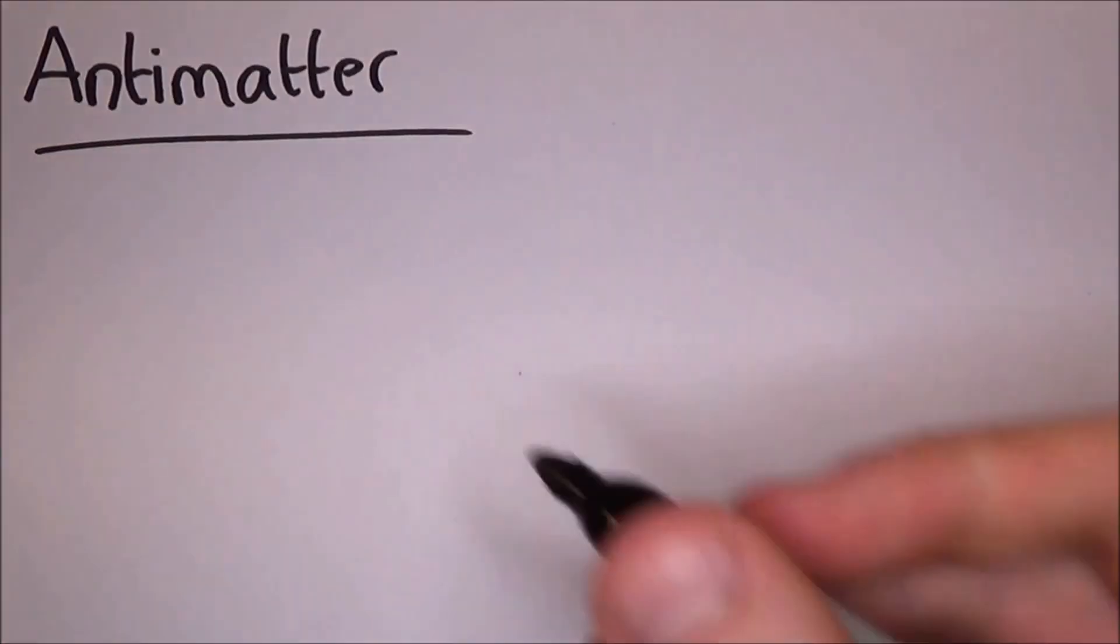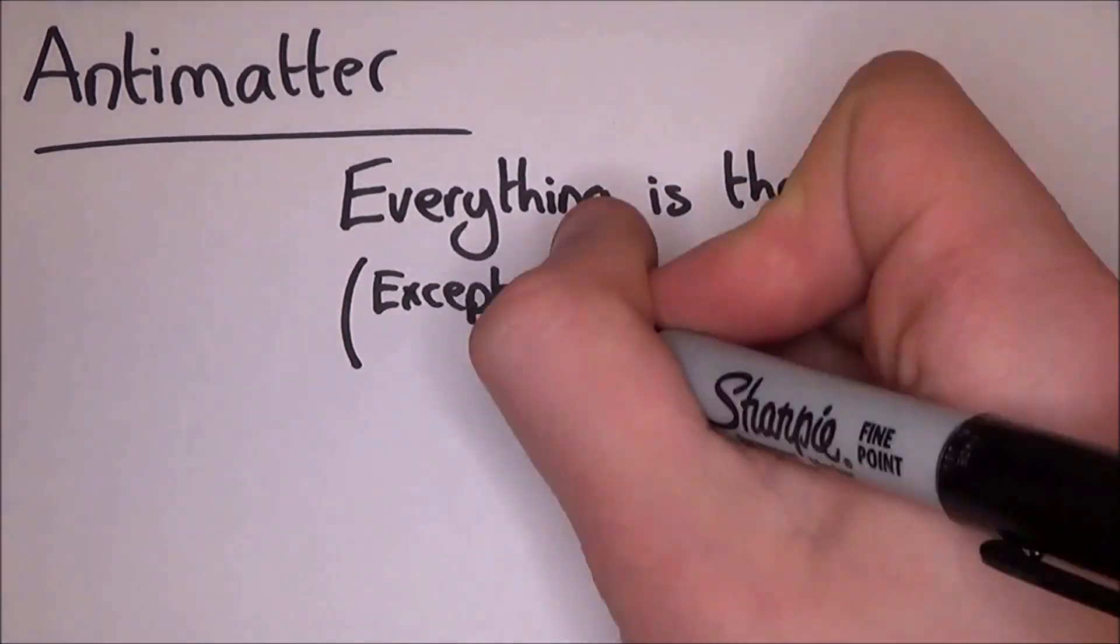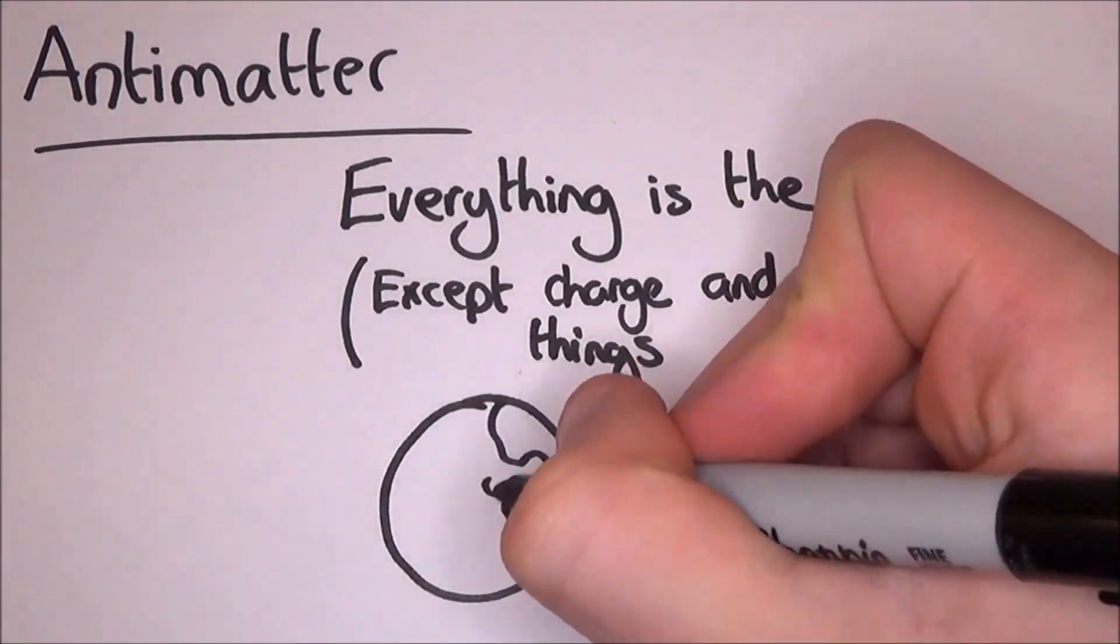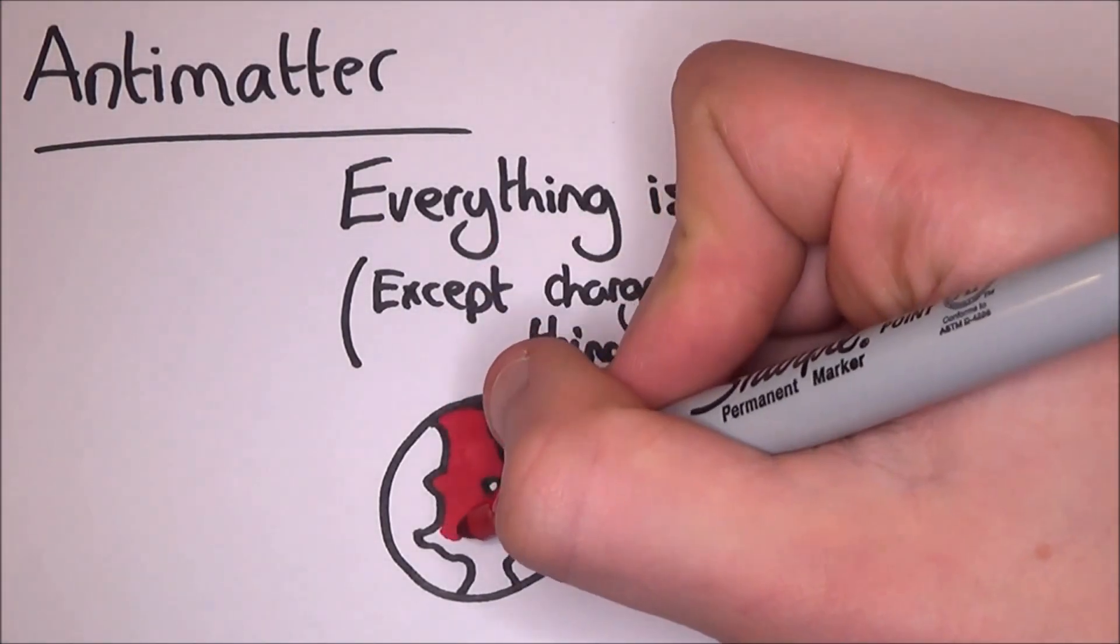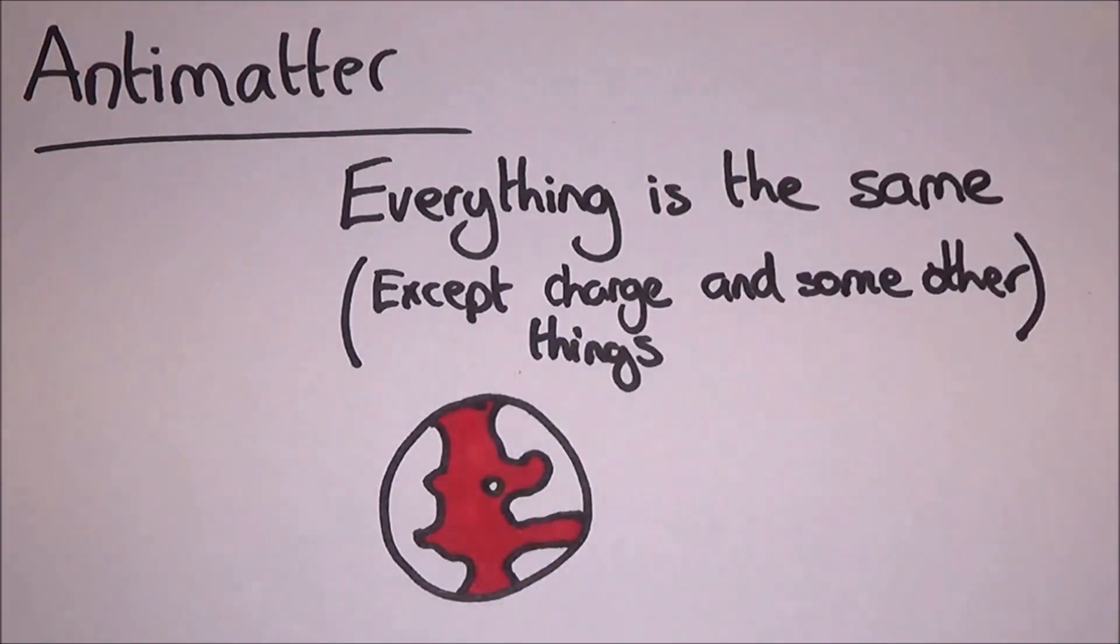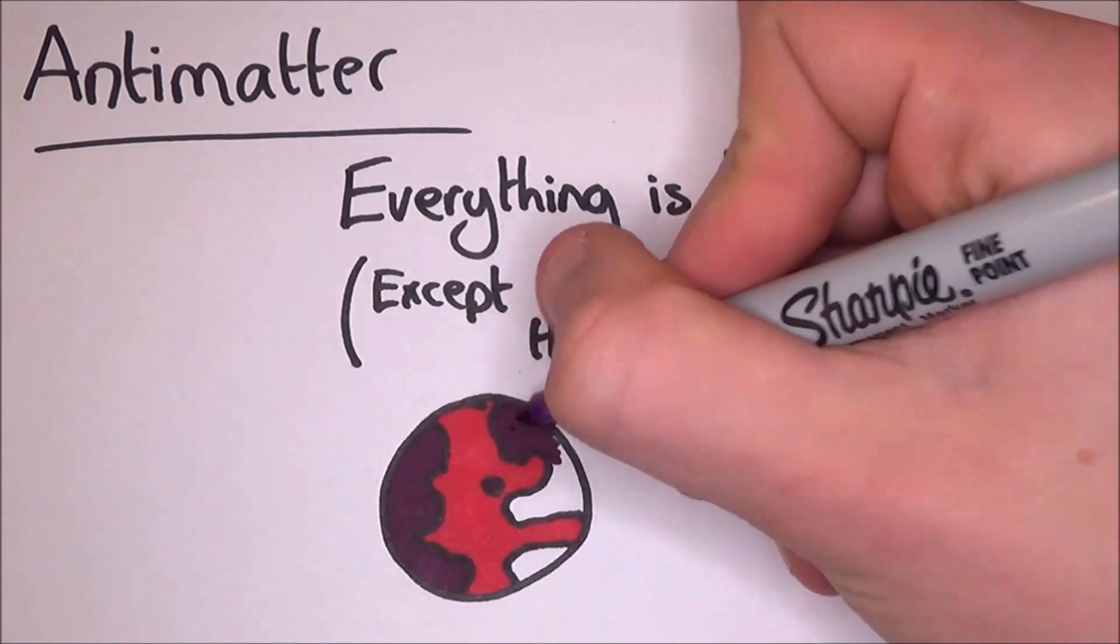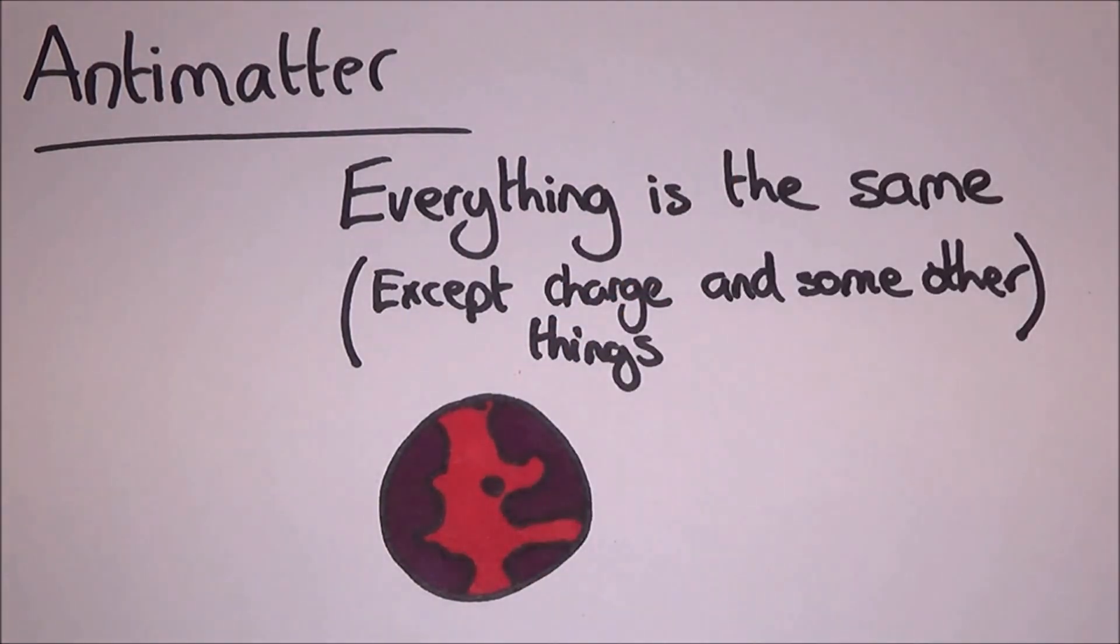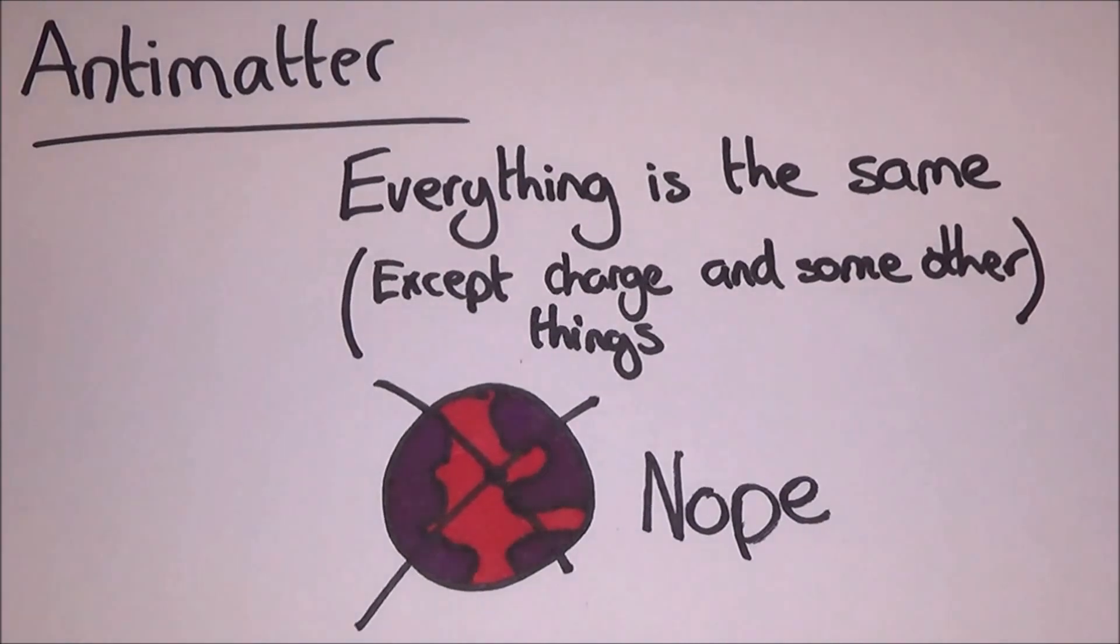The best part about anti-matter is that it's basically the same as matter, except for a few changes. The main one is that the charges are flipped, but there are also a few other things. In theory, there could be an anti-matter earth somewhere, and everything is the same, but all the charges are flipped and a few other things. But for reasons that we're only just dying to grasp, there was a massive event where matter outnumbered anti-matter and nearly destroyed all of it.